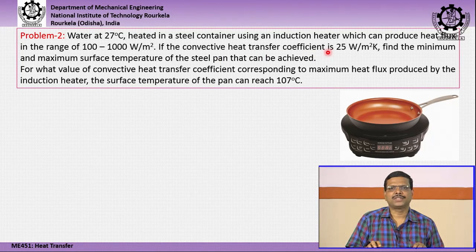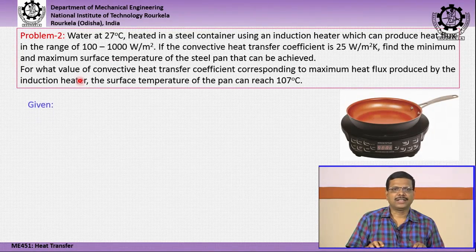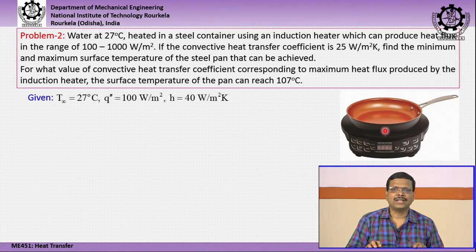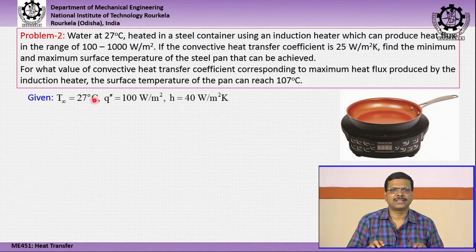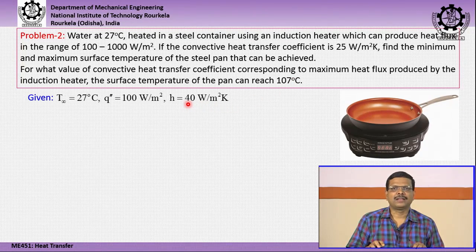The convective heat transfer coefficient h is given as 25 W/m²·K for the water side. We are asked to find the minimum and maximum surface temperature of the steel pan. The given information: heat transfer from outer surface of solid to ambient water at T∞ = 27°C, minimum heat flux = 100 W/m², and h = 25 W/m²·K.